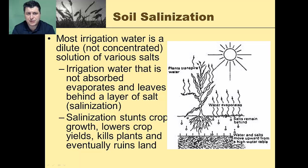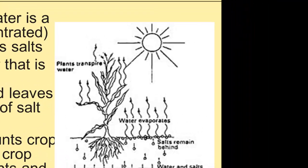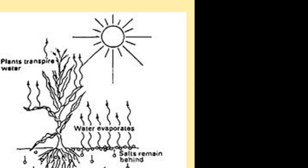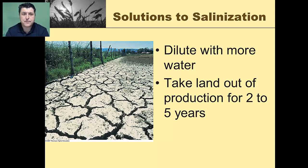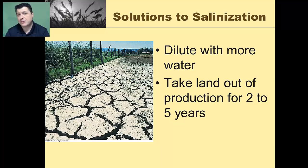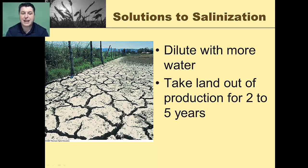Another major issue is soil salinization. Most irrigation water is a dilute solution of various salts. The irrigation water that isn't absorbed evaporates and leaves behind a layer of salt. This buildup of salts in the soil can stunt crop growth, lower crop yields, kill plants, and eventually ruin the land. Solutions include using more dilute irrigation water to reduce salt input, or taking land out of production for two to five years to allow rain and percolation to wash the salt out naturally.